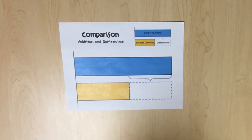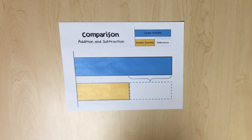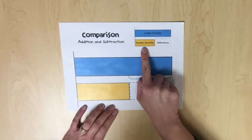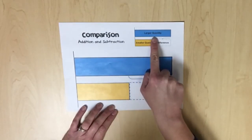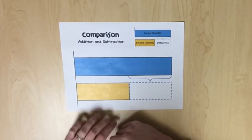This section of the unit focuses on solving one-step word problems involving the comparison structure. Comparison problems, like part-part-whole problems, involve relationships between quantities rather than a joining or separating action. Comparison problems involve the comparison of two different sets. Because one set is compared to the other, one set is labeled the smaller quantity and the other set the larger quantity. The amount by which the larger set exceeds the smaller set is the difference.